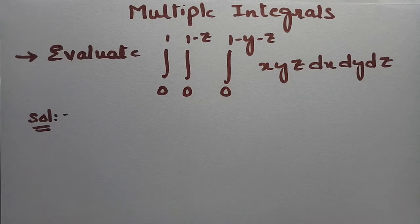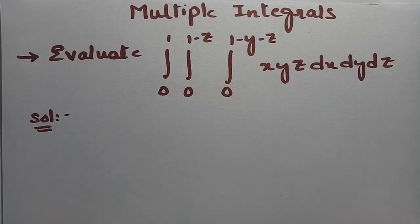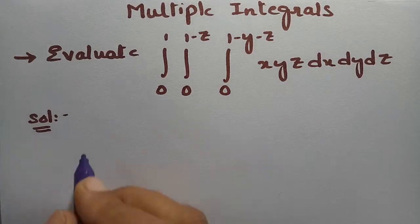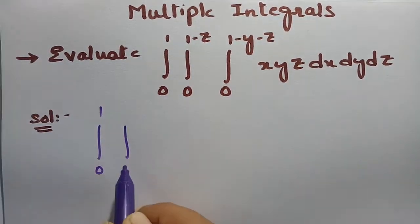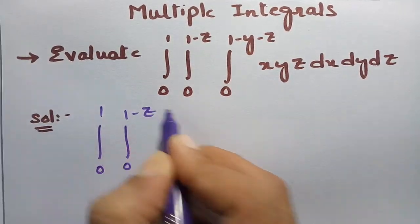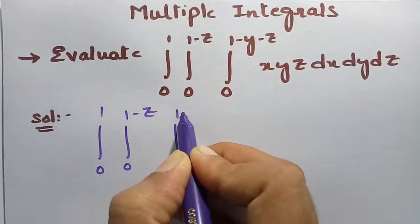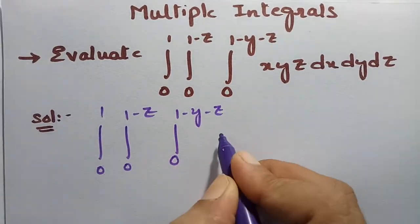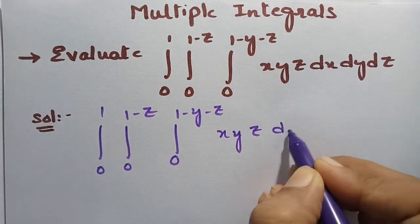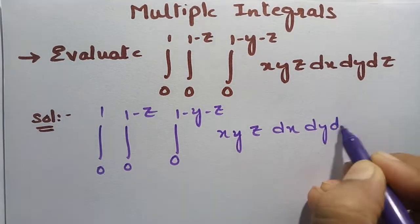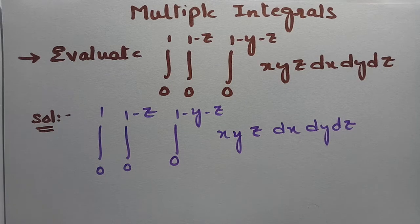You might be lagging somewhere in solving this problem, which you can't deny. Follow this video — it will immensely help you in getting the solution. Here is the problem from multiple integrals: we have to evaluate the triple integral, integral 0 to 1, integral 0 to 1 minus z, integral 0 to 1 minus y minus z of xyz dx dy dz.